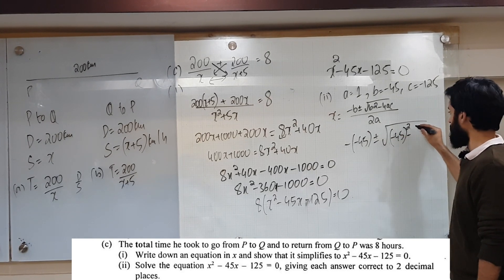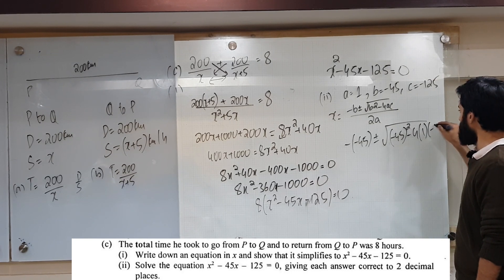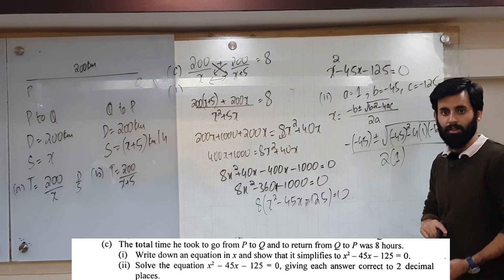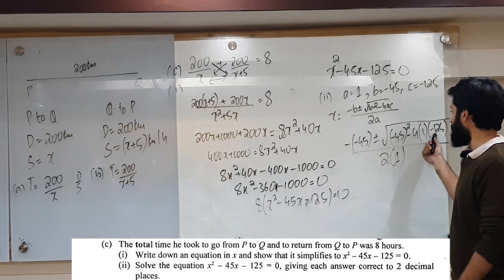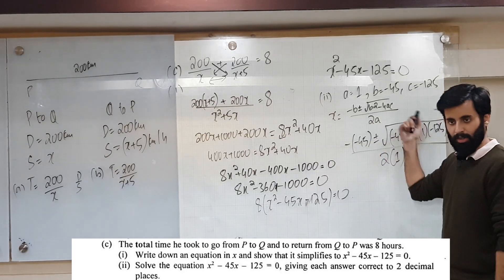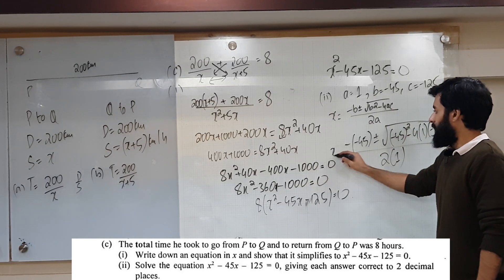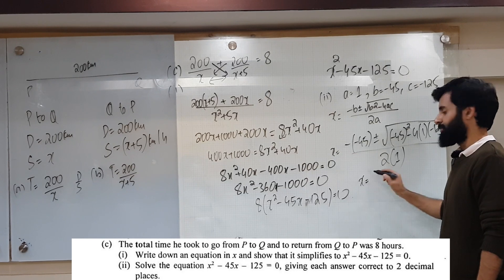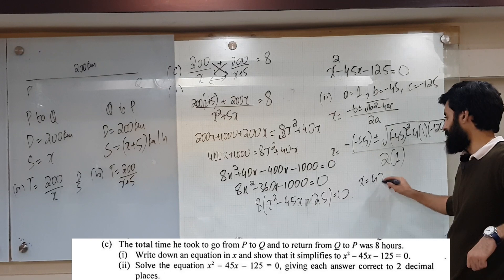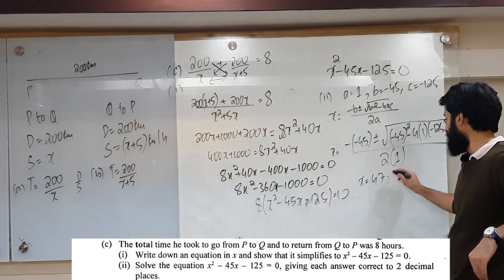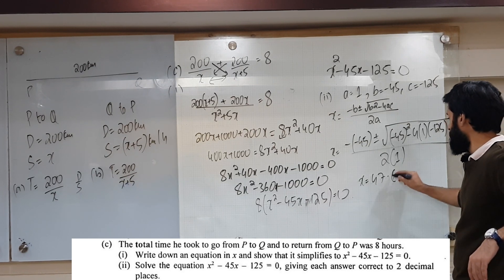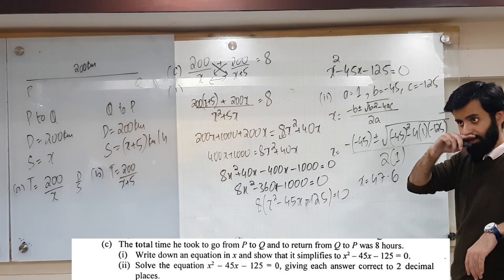When you solve it, minus 45 squared will be positive and minus times minus will be plus. Punch it into your calculator. The answer is 47.62. The question asks correct to two decimal places, so we write 47.62.